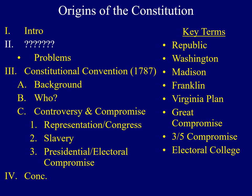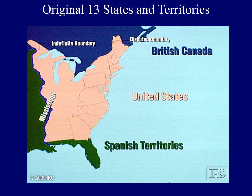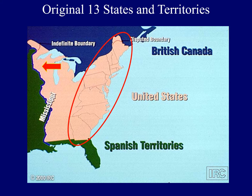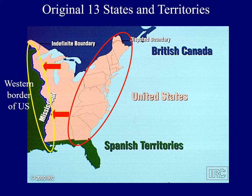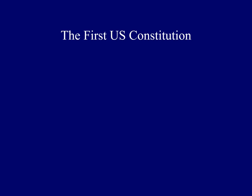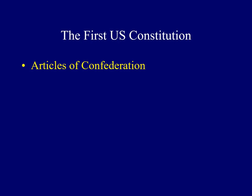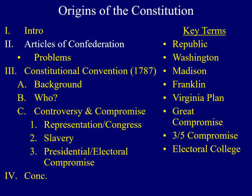I'd like to begin by talking about the first Constitution of the United States and some of its problems. This map identifies the land included in the original 13 states and territories at the end of the American Revolution. The area in pink on the right, the eastern seaboard, included the first 13 colonies that eventually became states. U.S. territory actually expanded all the way to the Mississippi River. In order to provide enough unity for those 13 colonies fighting to become states, they developed the first Constitution of the United States — the Articles of Confederation.